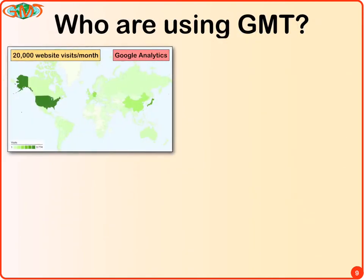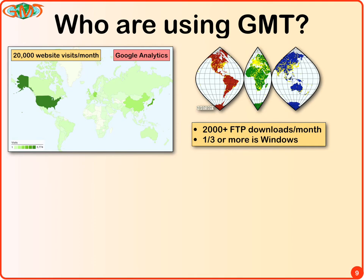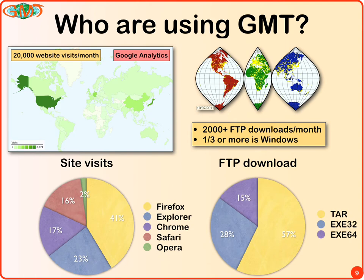Who is using GMT? Google tells us we're seeing about 20,000 website hits per month, scaling roughly with where populations are — we get hits from almost every country. As for downloads, we see over 2,000 individual FTP downloads per month. Based on browser statistics, Windows is about a third, Macs are about one-fifth, and the rest are Linux, Solaris, and others.